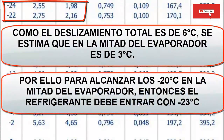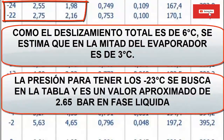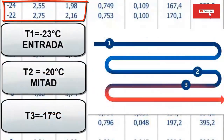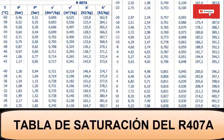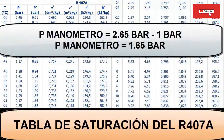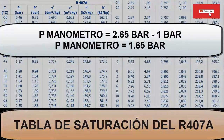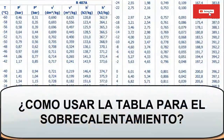Step eight: with the value of minus 23°C we recalculate the inlet pressure by looking up the liquid pressure in the table, which has an approximate value of 2.65 bars. Step nine: with this new pressure of 2.65 bars at the inlet of the evaporator, there is a temperature of minus 23°C; in the middle of the evaporator minus 20°C; and at its outlet minus 17°C. Steps 10 through 13: this procedure is how to graduate the system pressure. To find the pressure the manometer should mark, subtract the atmospheric pressure (1 bar) from the table value of 2.65 bars, resulting in 1.65 bars. The low pressure gauge should read 1.65 bars or 24.25 PSI.